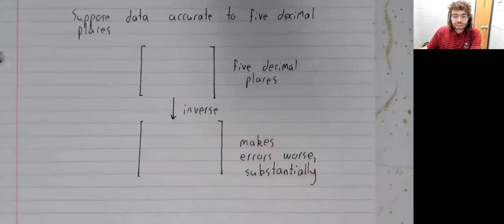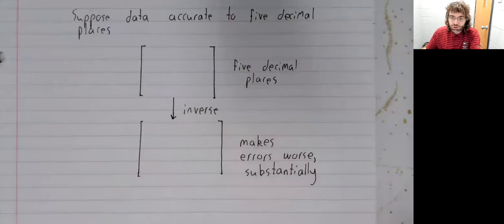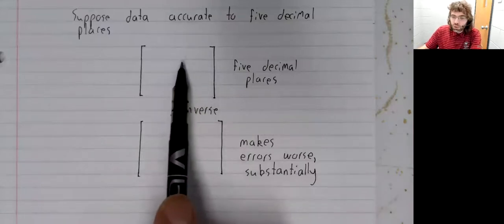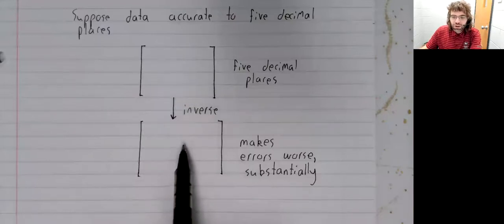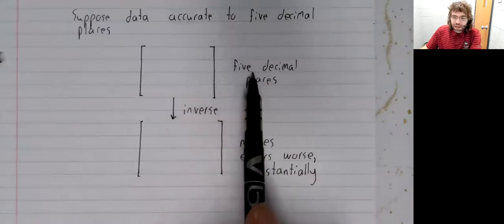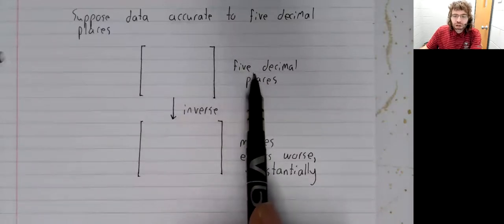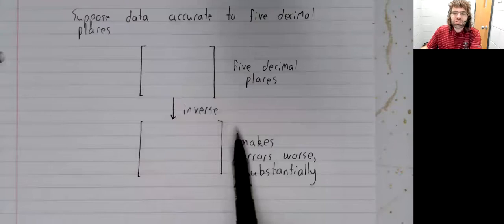To the point where if we have a large matrix, and not even a large matrix, we can see this in like seven by seven matrices, where we have a little rounding error here. And we find an inverse. And the rounding error here causes the inverse to not even be close to the right answer.